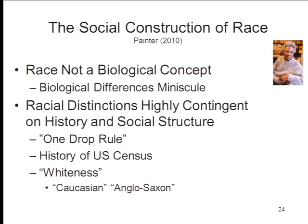Here's another example, from Nell Irvin Painter about the social construction of race. In much the same way, Painter argues that race isn't a biological construct — the biological differences between the so-called races are, in fact, extremely small — but that racial distinctions, like gender distinctions, are highly contingent on history and social structure. There was a time in the history of this country where racial relations were characterized by the one-drop rule: if you had one black ancestor anywhere, you were classified as black. We don't do that anymore. Painter also has a very interesting take on whiteness, which she argues is also a product of social constructionism, with a long analysis of where that notion of whiteness came from.